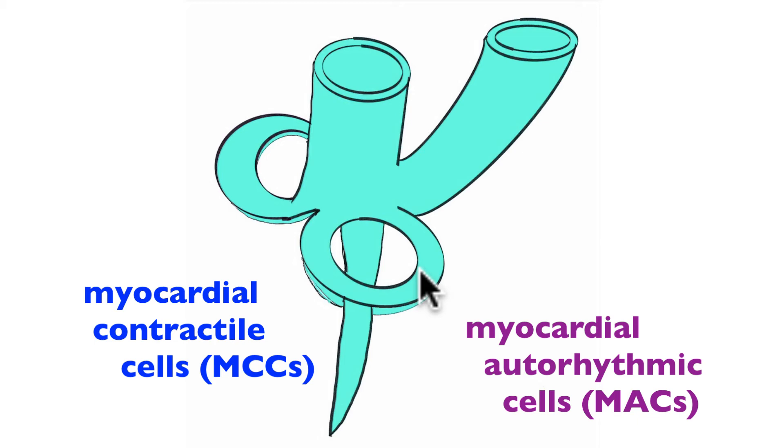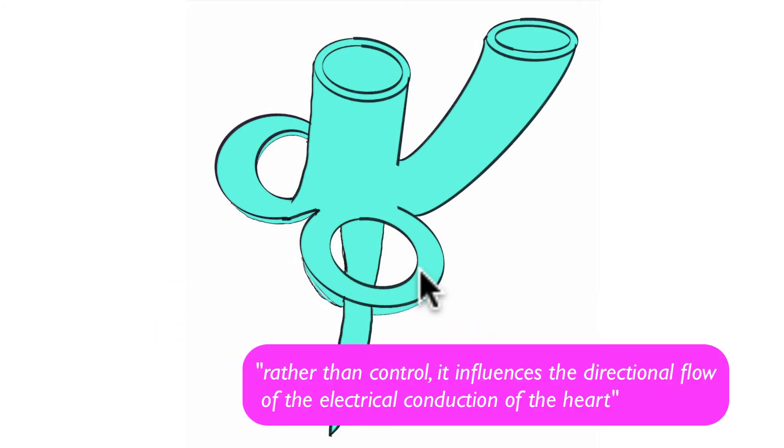And then back to the fibrous skeleton, the fibrous skeleton also controls that electrical conduction. So the electrical conduction, once again, is the excitation of the individual myocardial autorhythmic cells. But as we learned about circulation or flow of blood through the heart, we don't want that excitation happening in a random fashion. We want it happening in a directional fashion.